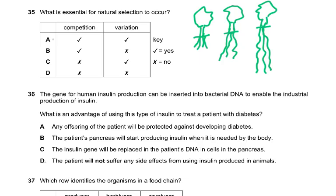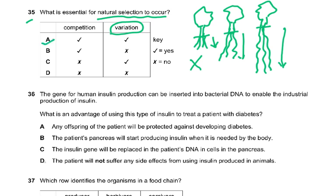Question number 35: What is essential for natural selection to occur? Taking the example of oak trees with different root lengths — short, medium, and long — during drought, those with short roots die as they are less well adapted. Number one: variation must be present. Number two: there is competition — for water, nutrients, nitrates in the soil. That is why the answer is A.